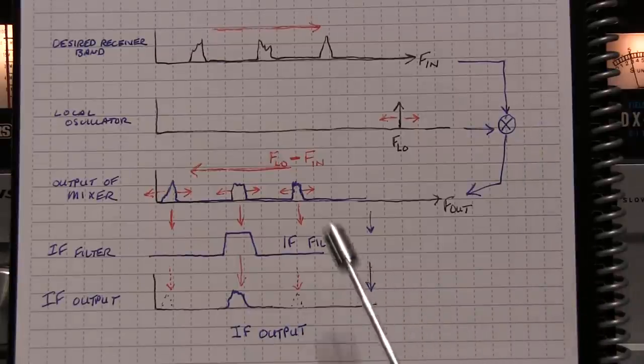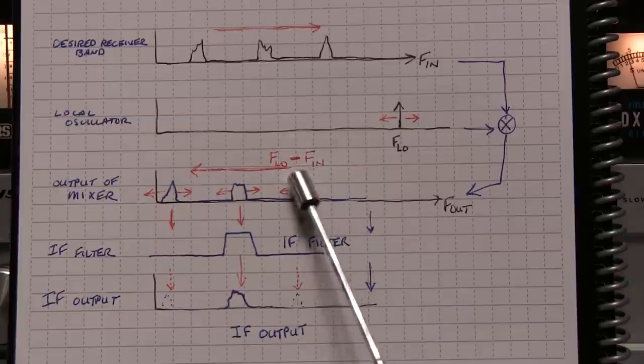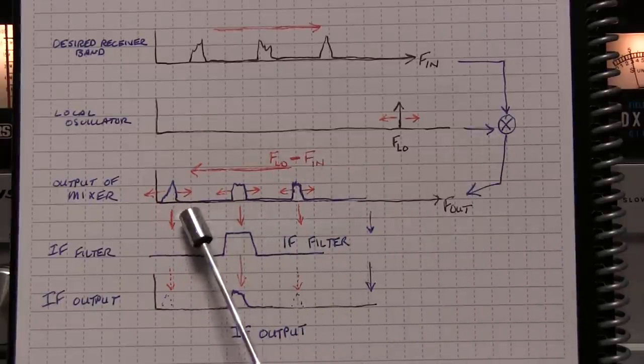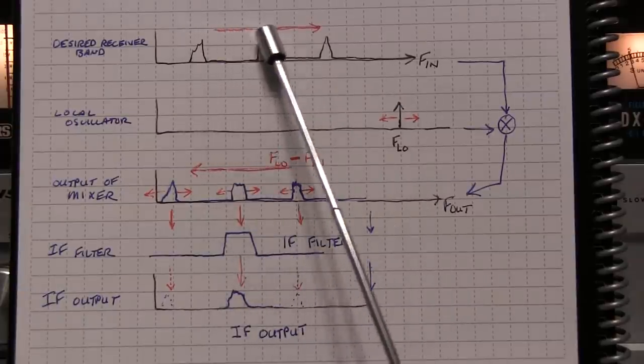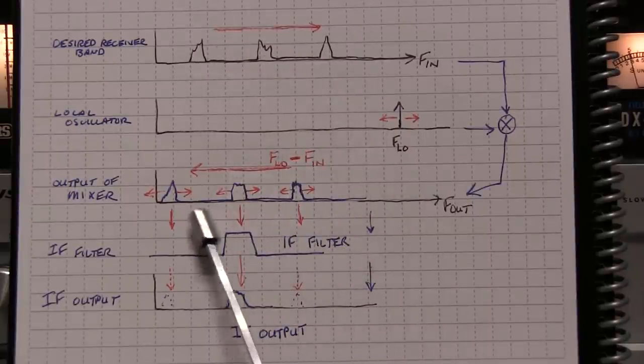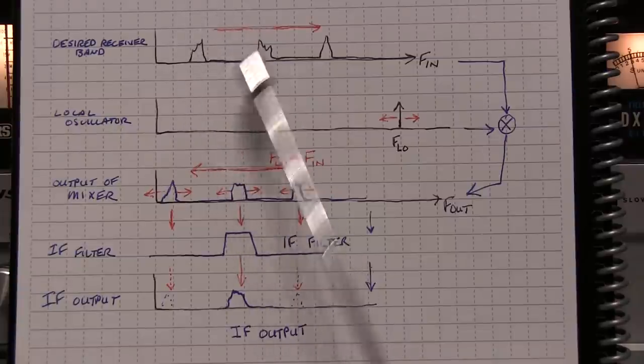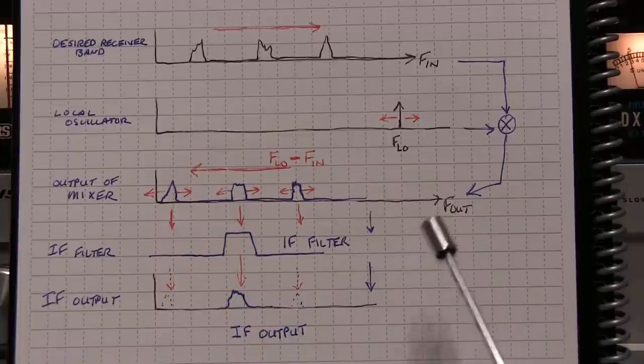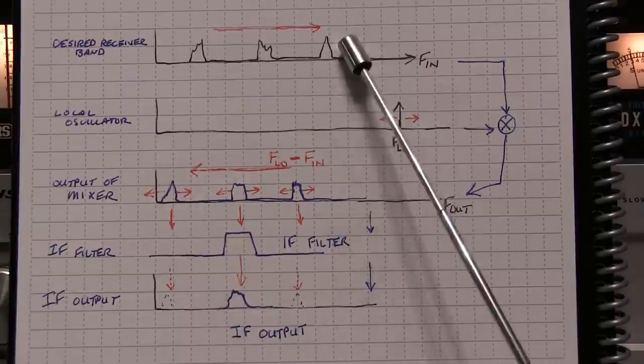And in this case, the product that we're interested in is the local oscillator frequency minus the FIN. And because we have minus FIN here, what that means is the spectrum that's coming out of the mixer is inverted from the spectrum going in. So while the frequency is going up in this direction in terms of the frequency of each of these stations, it's going in the opposite direction at the output of the mixer. This is the lowest frequency station. This is the one in the middle. And this is the highest frequency station. This is simply called spectral inversion. And it happens when you're using the difference product that's a result from the LO being higher than the signal of interest.